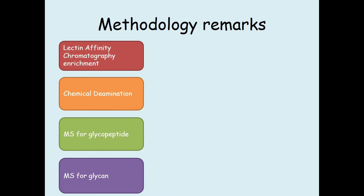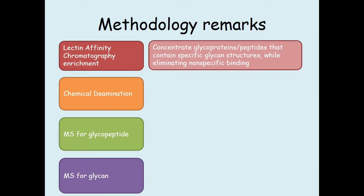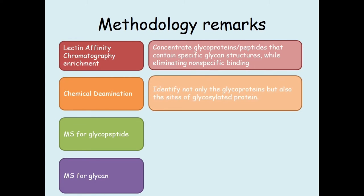Lectin affinity chromatography is commonly applied in upstream processes. Through this process, the glycoprotein or peptides are concentrated such that it only contains specific glycan structures, while at the same time eliminating non-specific binding. Chemical deamination follows after. This step is essential to identify not only the glycoprotein, but also the site of the glycosylated protein.